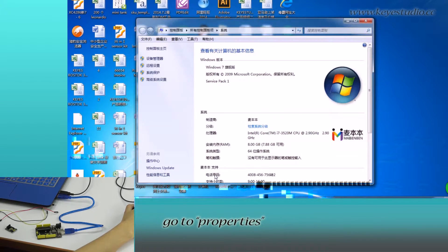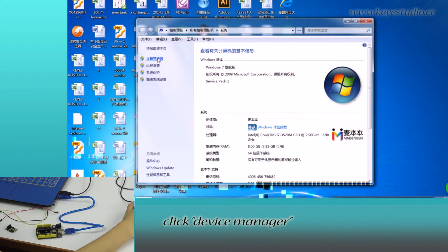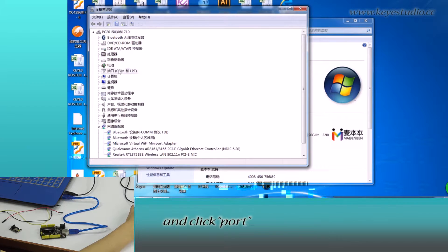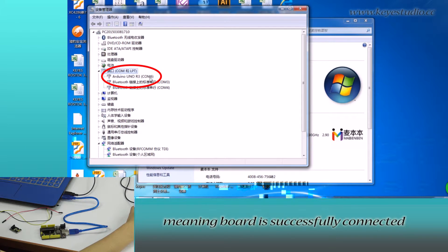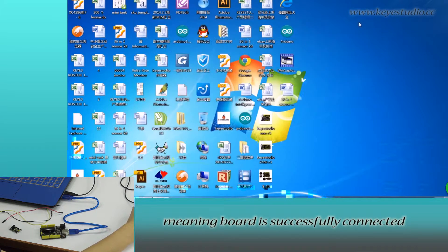Right-click Computer, go to Properties, click Device Manager, and click Port. You can see Arduino Uno R3, COM6, meaning board is successfully connected.